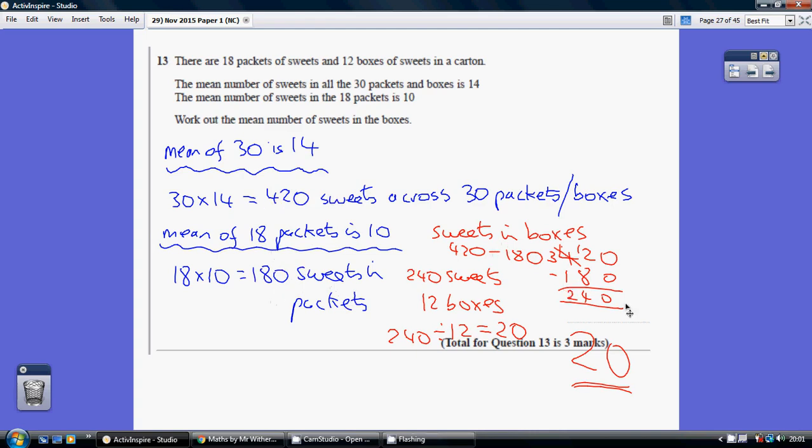Take one away from the other gives us 240 sweets in the boxes, spread across 12 boxes. So how many in each box? What's the mean number in each box? 240 divided by 12 gives us 20.